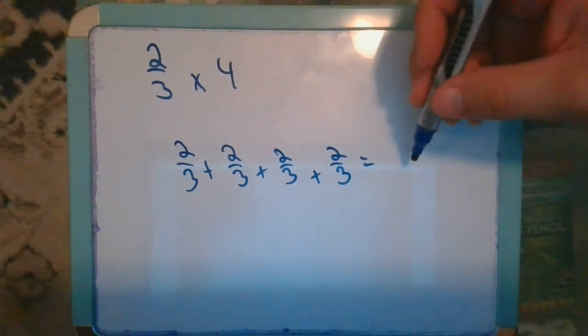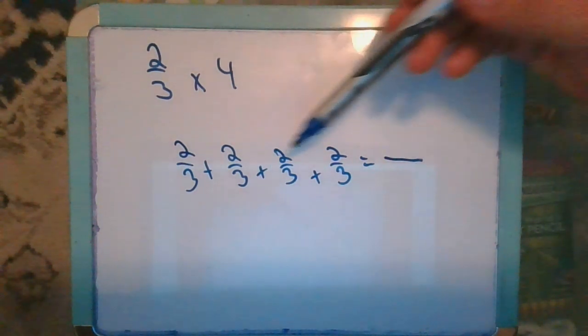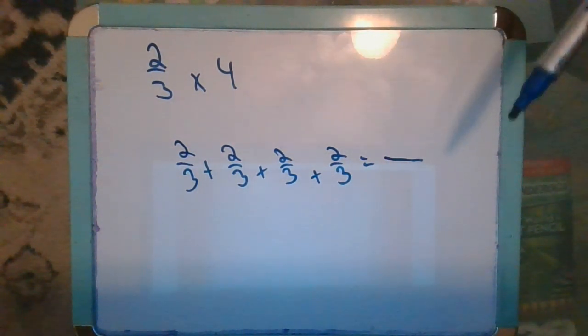Now if we remember from before when we were adding and subtracting fractions, we're only adding the numerators. The reason for that is because the denominator tells you the size of the piece. The size of the piece is not changing. We're just getting four groups of this two-thirds.